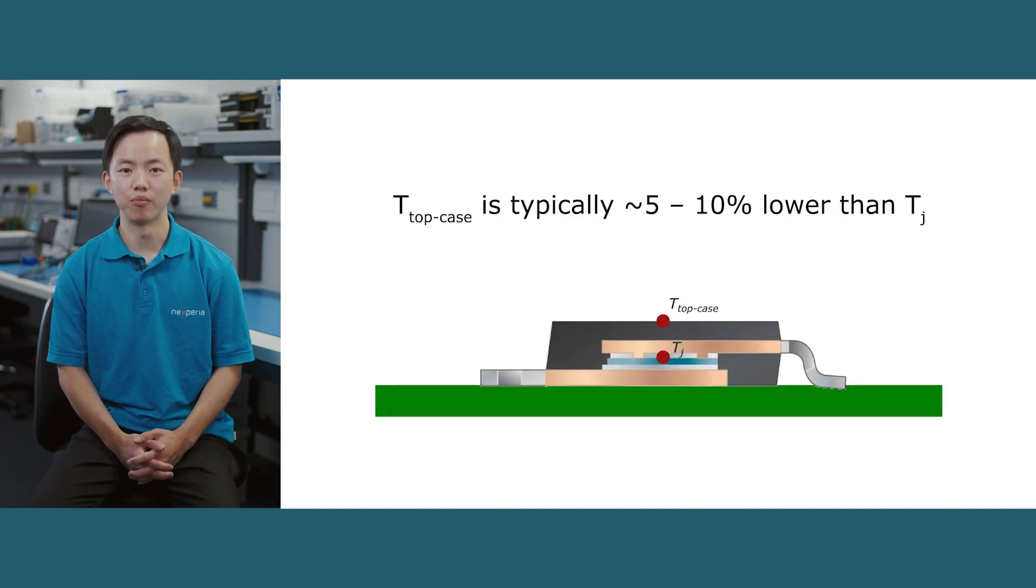Hence, you can expect the top case temperature to be around 5-10% lower in temperature compared to the junction for MOSFETs under natural convection.